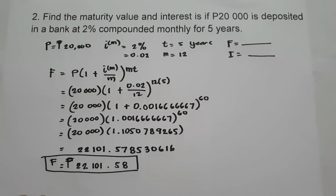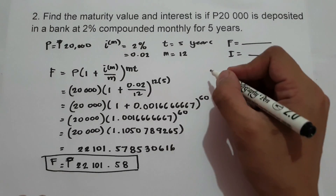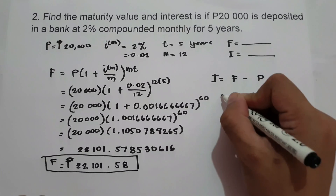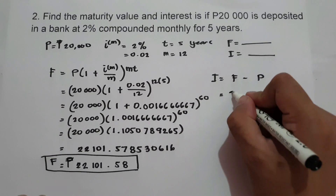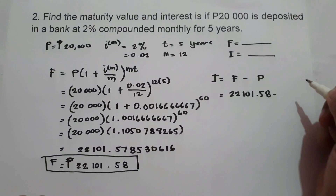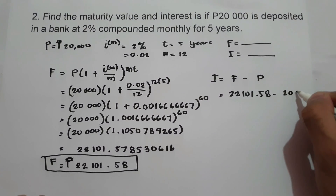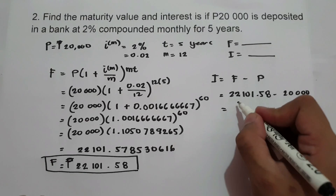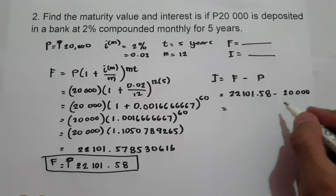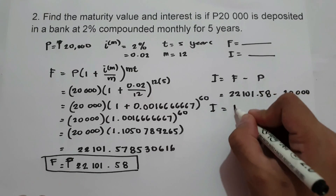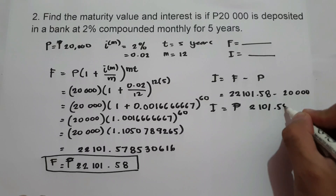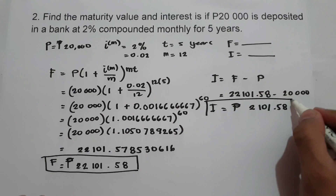To find the interest, we use future value minus principal: 22,101.58 minus 20,000 equals 2,101.58. This will be our answer for the interest.